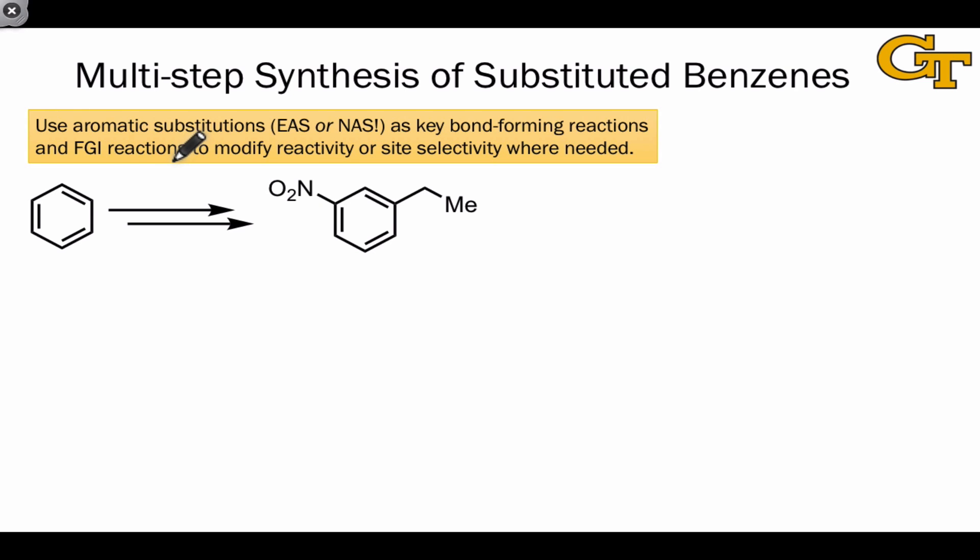Let's work through some examples of multi-step syntheses of substituted benzenes. The general idea in these syntheses is to use aromatic substitutions, either electrophilic aromatic substitution or nucleophilic aromatic substitution as the key bond forming reactions, or in a retrosynthetic sense, the key disconnections. And functional group interchange, or FGI reactions, to modify side chains on the benzene ring to achieve reactivity or site selectivity where we need it.